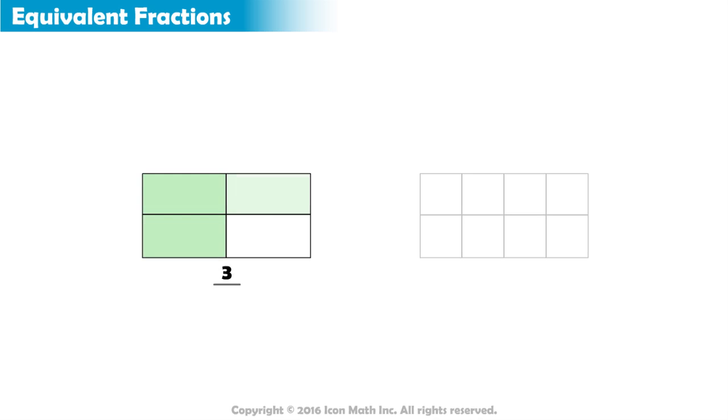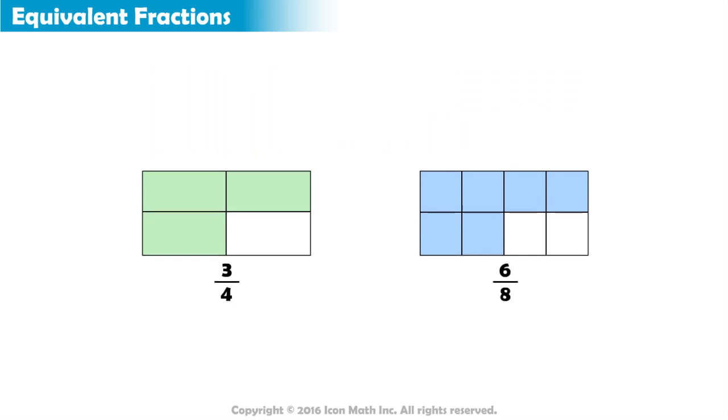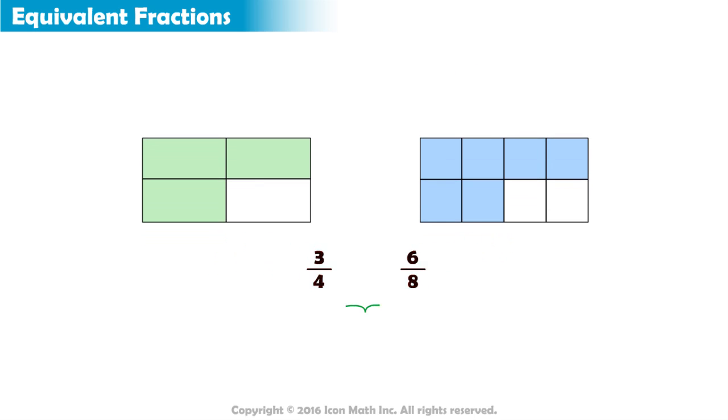The first model has 3 out of 4 equal parts shaded in green, while the second model has 6 out of 8 equal parts shaded in blue. Both shaded regions cover the same area of the whole. So 3 fourths and 6 eighths are equivalent. The difference between them is that in each case, the model was divided differently. So the numerator and denominator of the corresponding fraction changed.